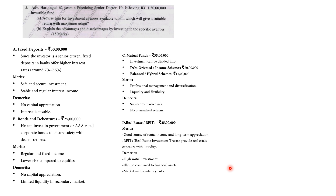Next, Real Estate: ₹25,00,000. Real Estate Investment Trust can also be considered — it is a good source of rental income. Demerits: high initial investment, illiquid compared to other financial assets, and market and regulatory risks are also present.